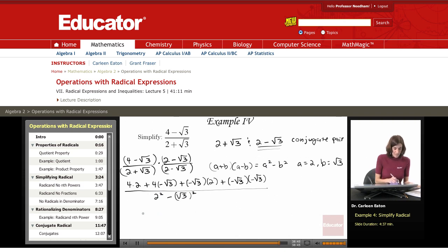Simplifying. 4 times 2 is 8. This is 4 times negative 1. So that's negative 4 square root of 3. This is negative 1 essentially in front of here times 2 is negative 2 root 3. Here I have a negative and a negative. That's going to give me a positive. So that's going to be plus the square root of 3. And that's squared.